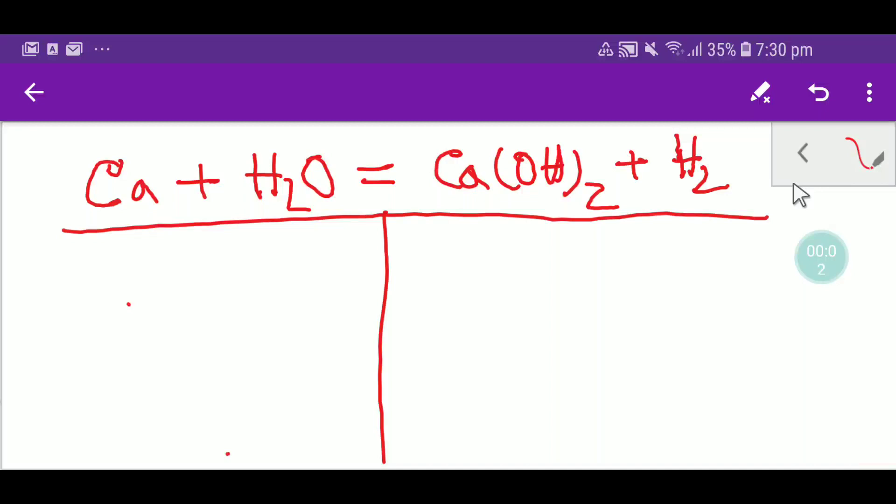Welcome to Chemistry Tutorial 360. Today we are going to balance this equation: calcium plus water yields calcium hydroxide, which is a base, plus hydrogen. To balance this equation, I have to count the atoms from both sides. So let me first do it on the left hand side, or reactant side.